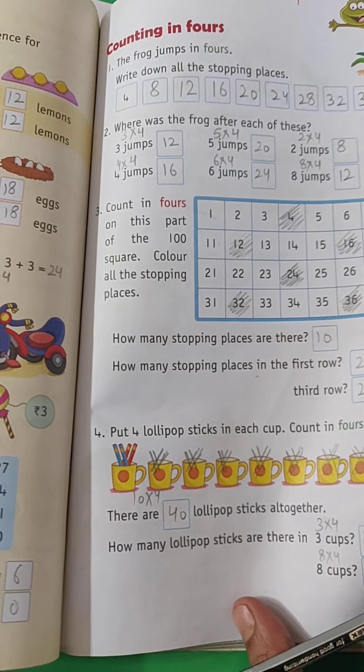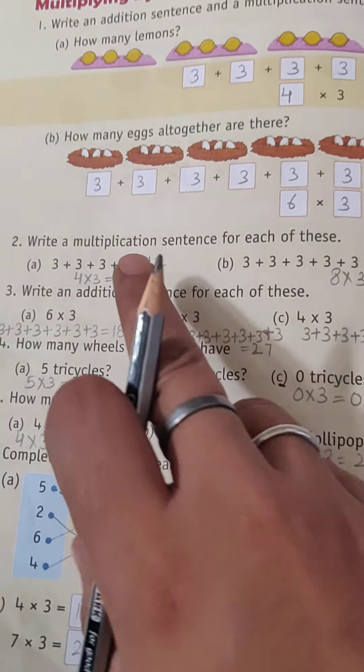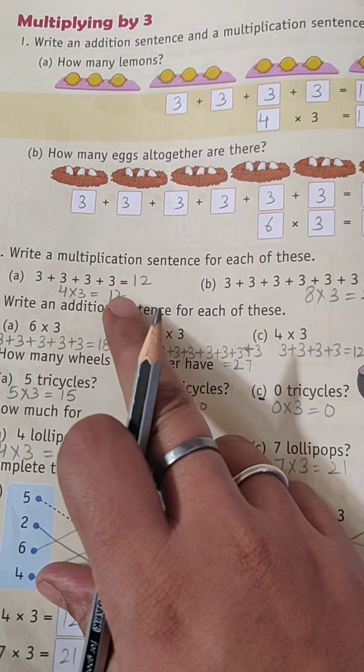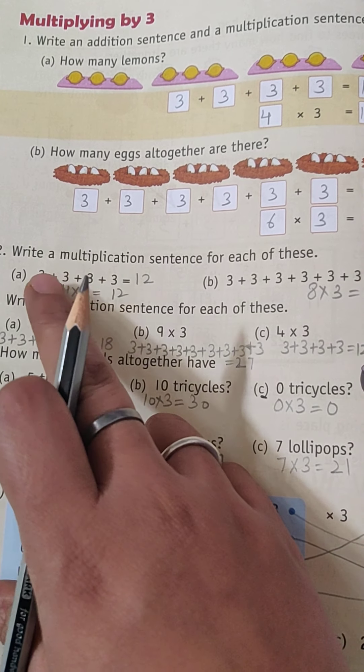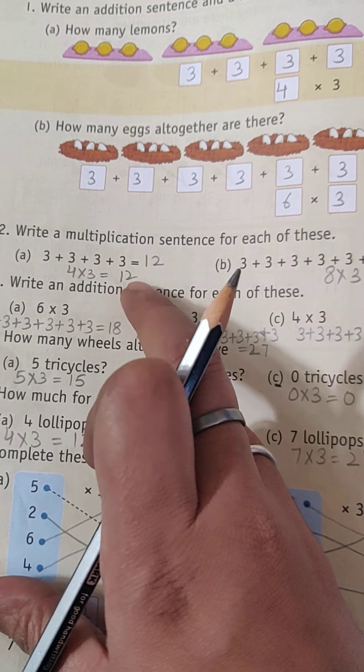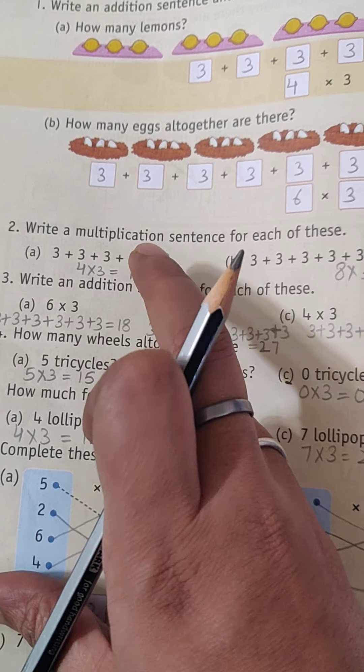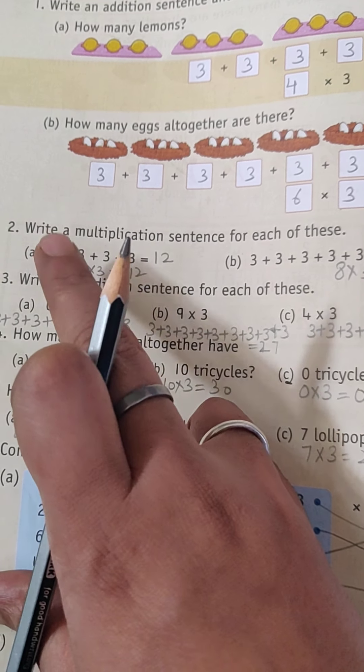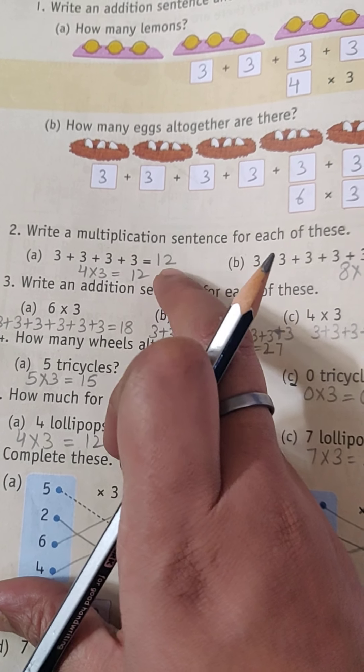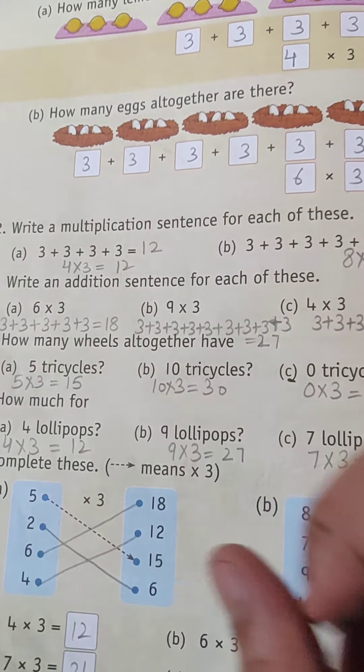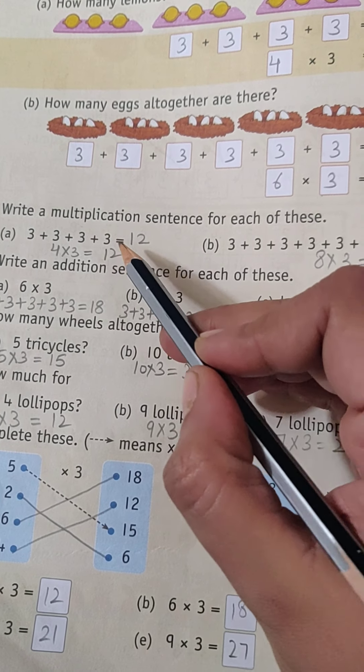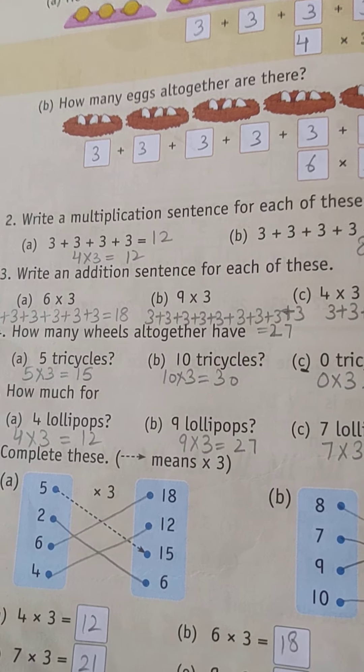One more important question is how to write the multiplication sentence and addition sentence. If you are given the addition sentence, then you have to write the multiplication sentence in this way, like four into three equals twelve. Then the same way you will write the addition sentence also, like three plus three plus three plus three. You have to write the answer also, children. Even if you are not being mentioned that you have to write the answer, still you have to write the product.